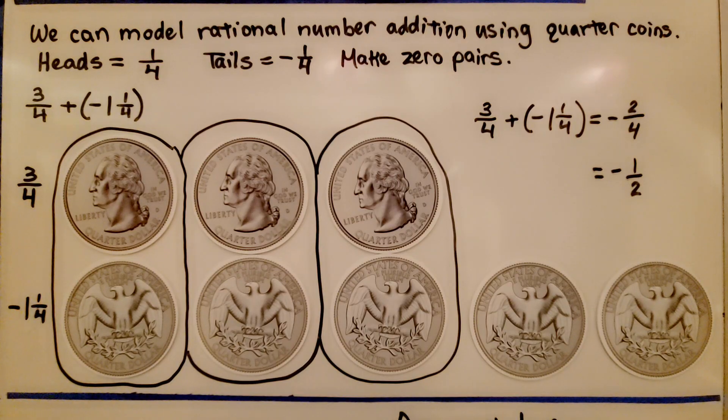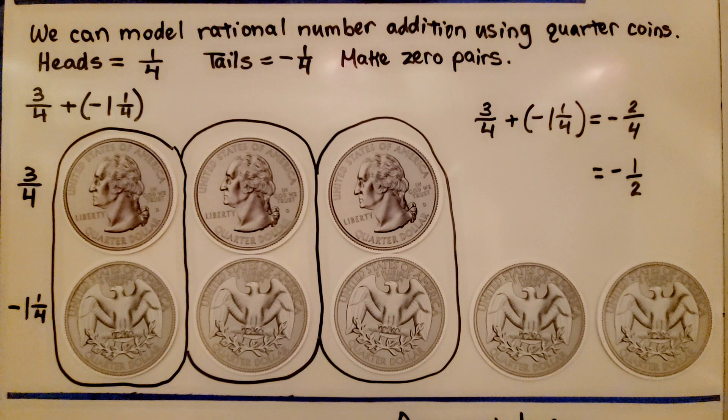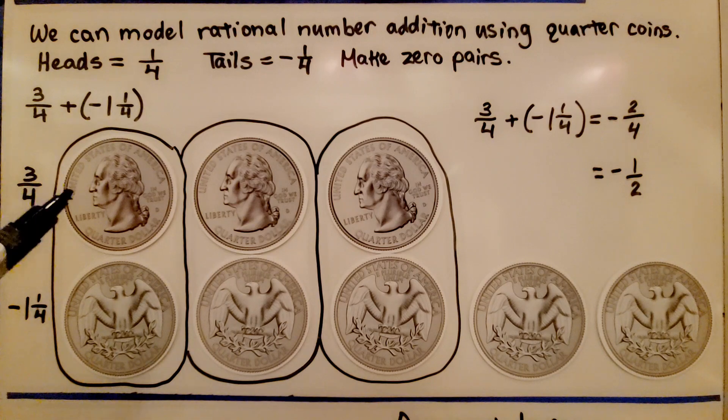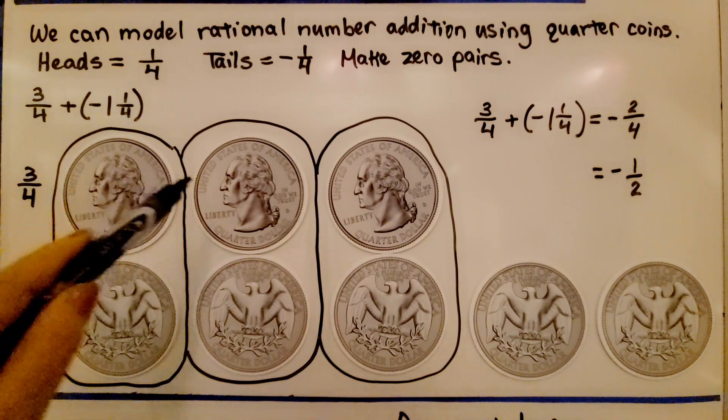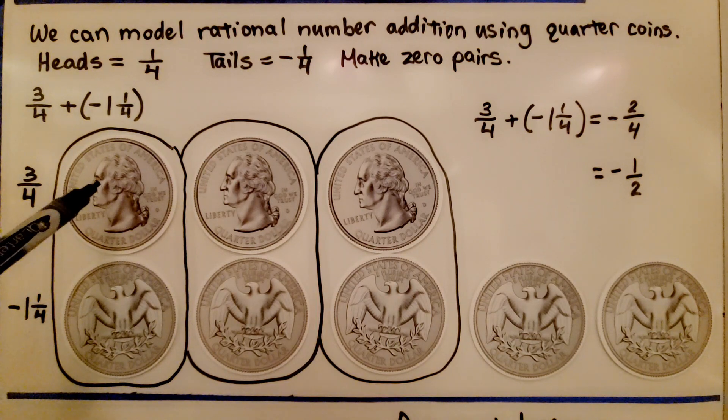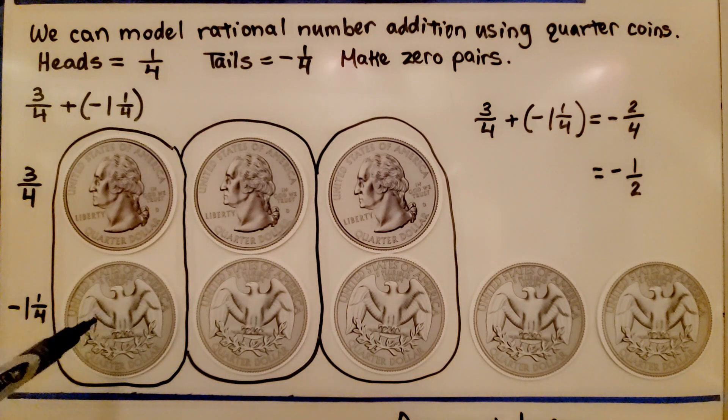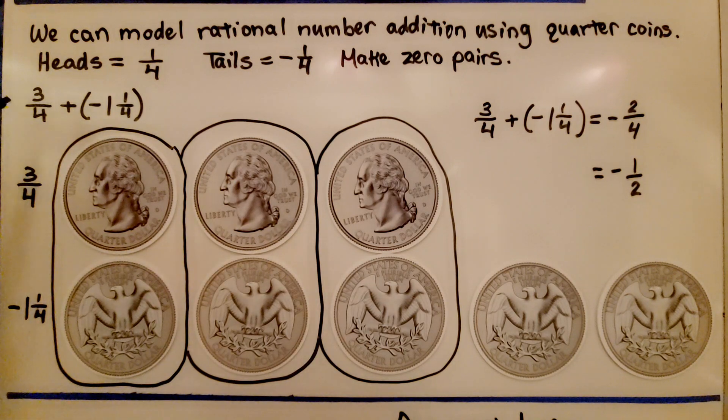We can model rational number addition using quarter coins. There are 4 quarters in one whole dollar. We can use each quarter to represent 1 fourth. We can use heads as a positive 1 fourth and tails as a negative 1 fourth.